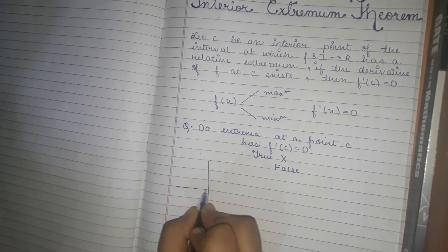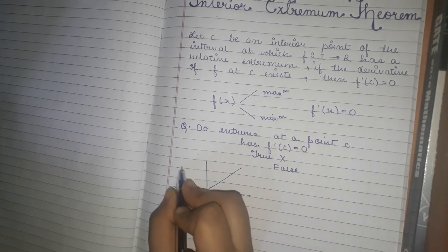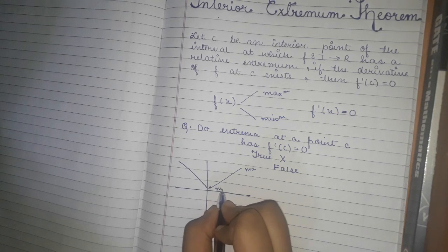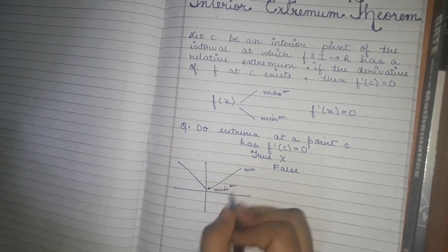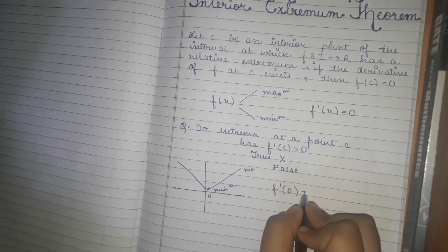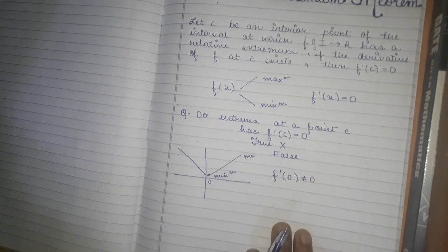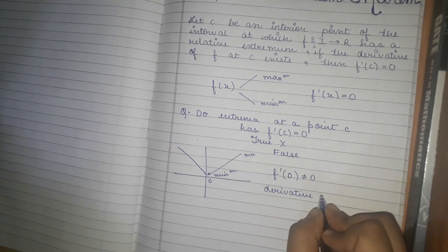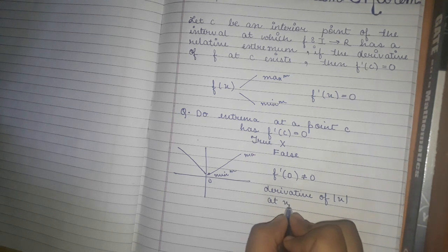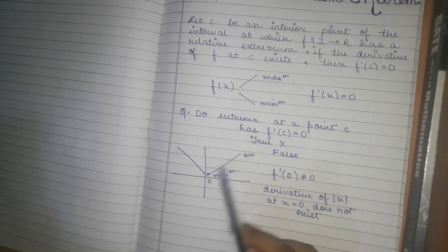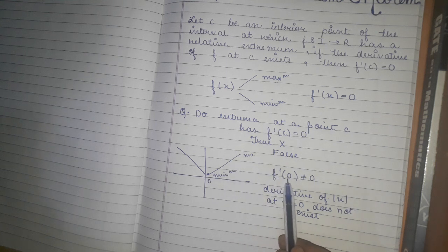Why is it false? Consider the modulus function |x|. It has a minimum at x = 0. But if we look at the point x = 0, f'(0) is not equal to 0 — in fact, the derivative of |x| at x = 0 does not exist. So the function has an extremum at x = 0 but f'(0) does not exist, not merely equal to 0.